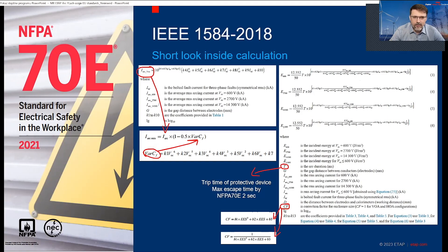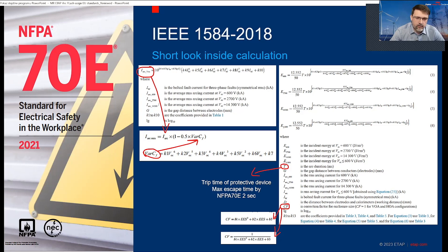Compared to IEEE 1584, there's no short look inside — it's getting more complicated. In IEEE 1584, we calculate arc current with a variation coefficient, and overall we calculate for three different voltage points: 600V, 2700V, and 14,300V — then extrapolate for the voltage needed. We do the same for energy. There is a tripping time taking into account arc current, electrode distance, and a coefficient factor for electrode configurations and enclosure.